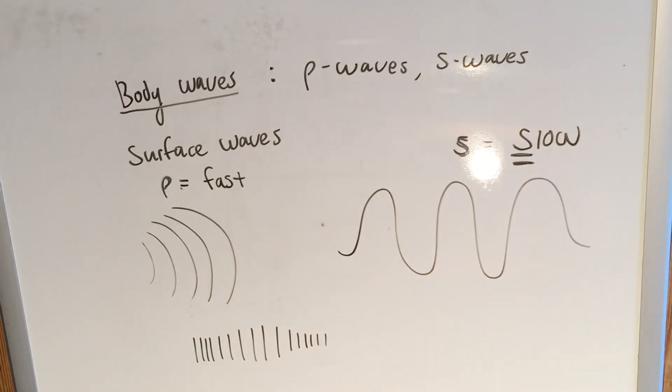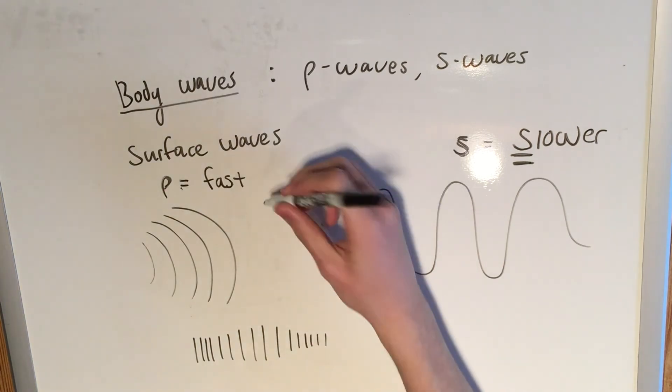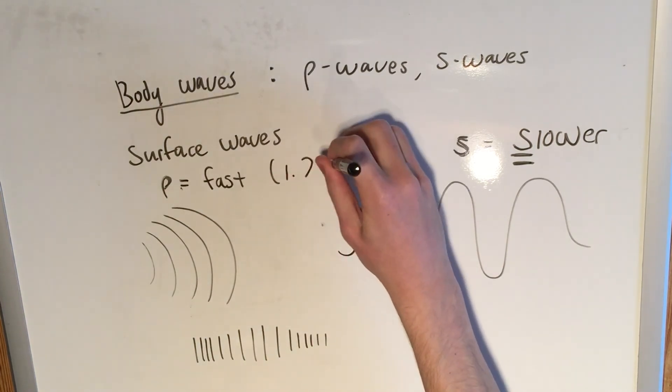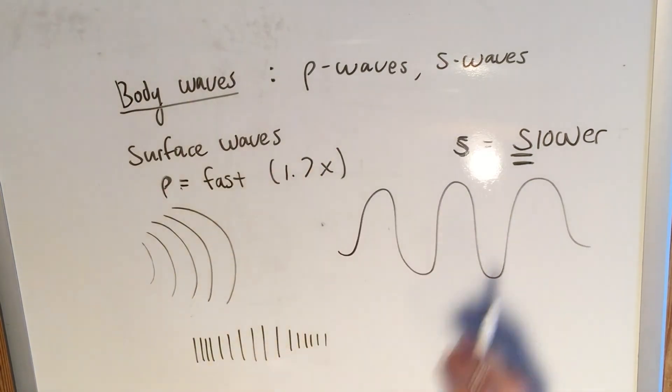Now of course, any amount of energy transferring through a medium is, of course, going to be relatively fast compared to any physical object moving. So calling them slow is perhaps inappropriate, but slower, yes. So an S wave is usually slower. And to be exact, P waves are usually about 1.7 times faster than an S wave.